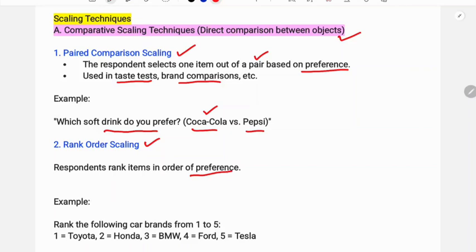The second type is rank order scaling, where respondents rank items in order of preference. For example, rank the following car brands from one to five — suppose brands like Toyota, Honda, BMW, and Tesla are given and respondents assign rankings.